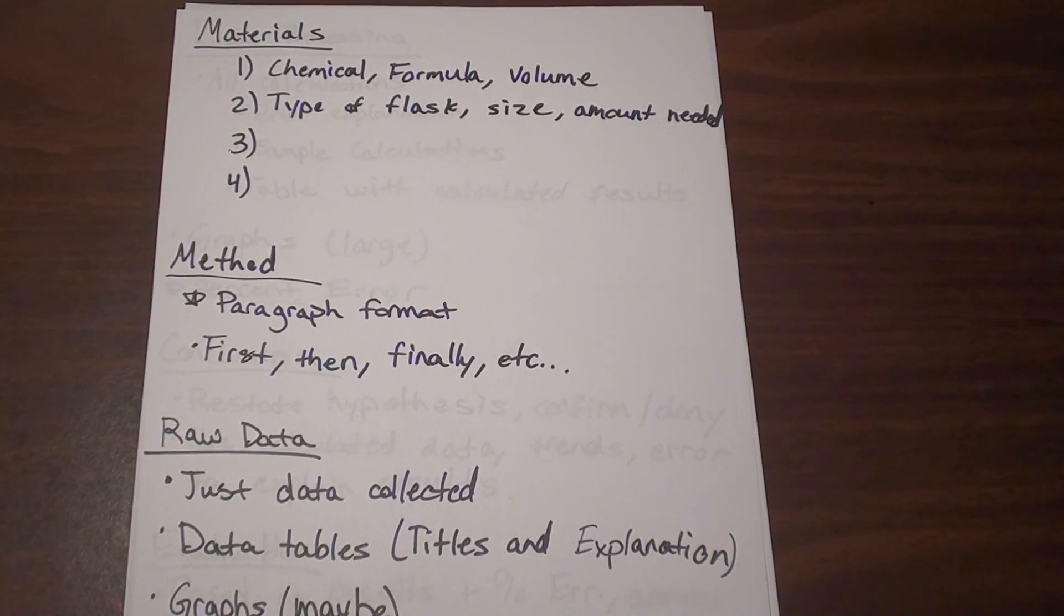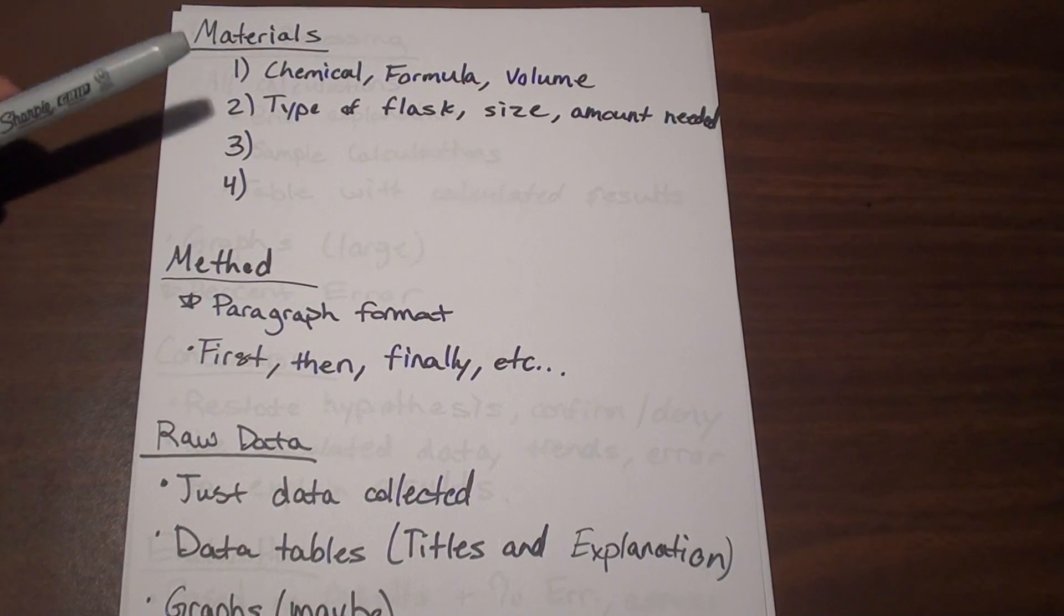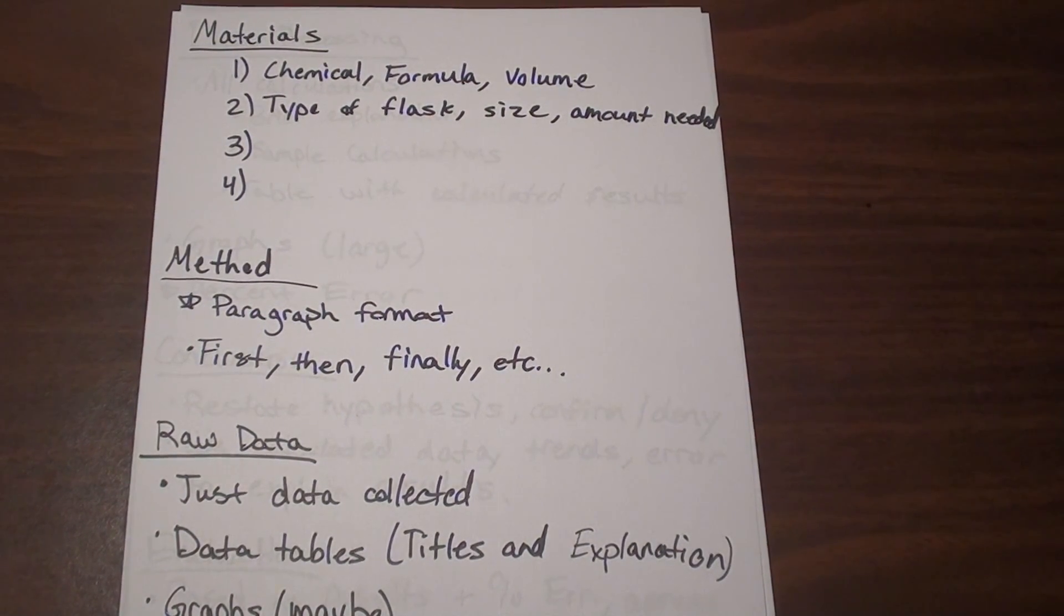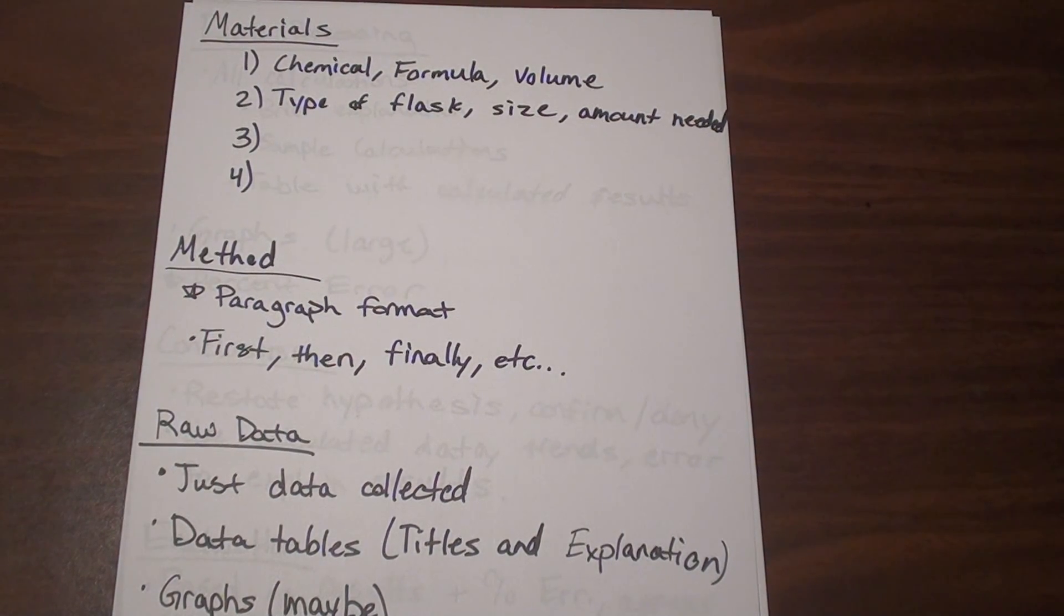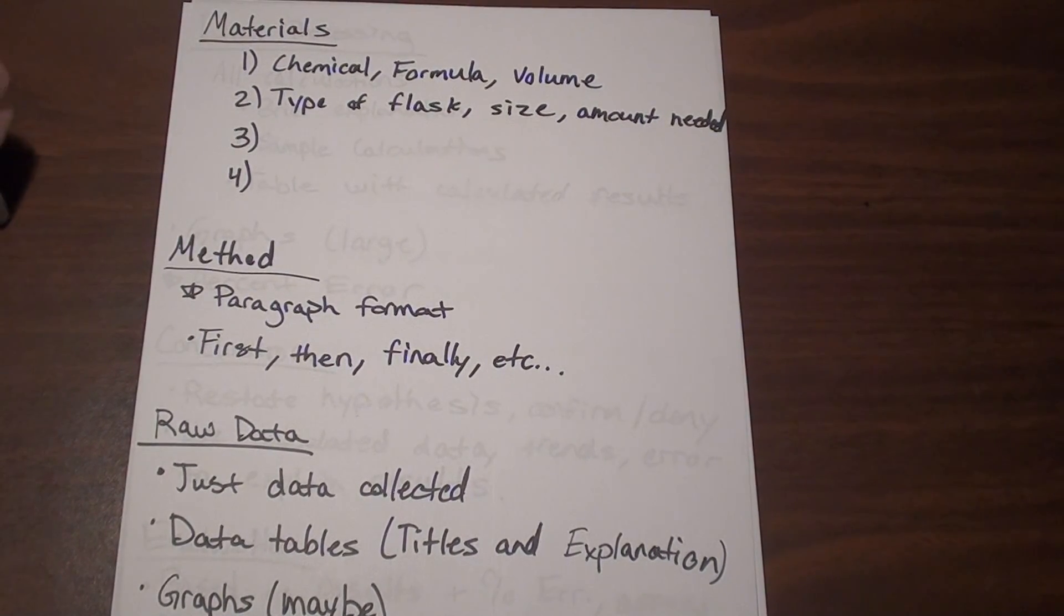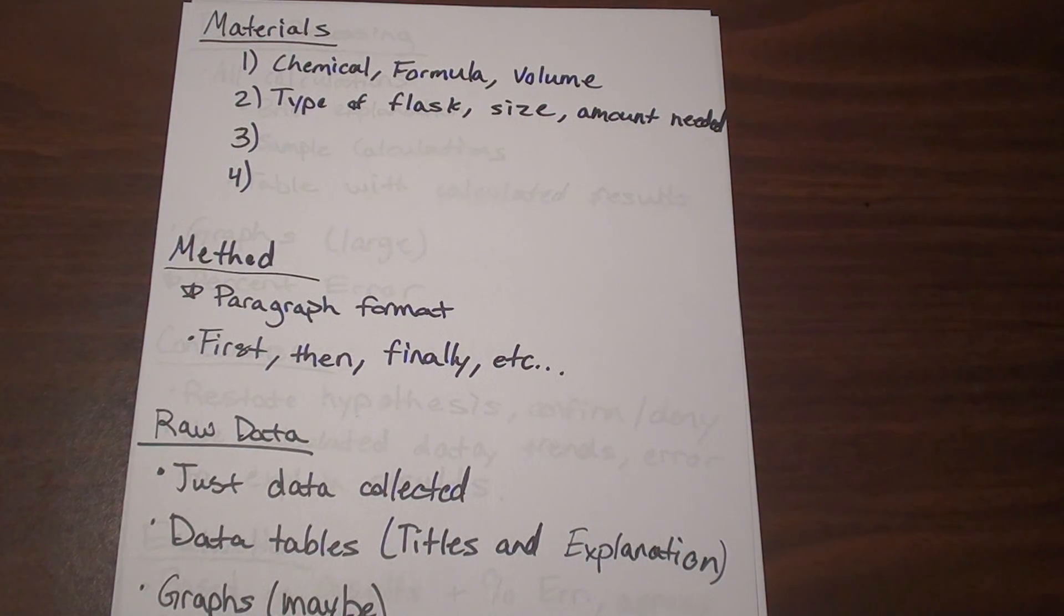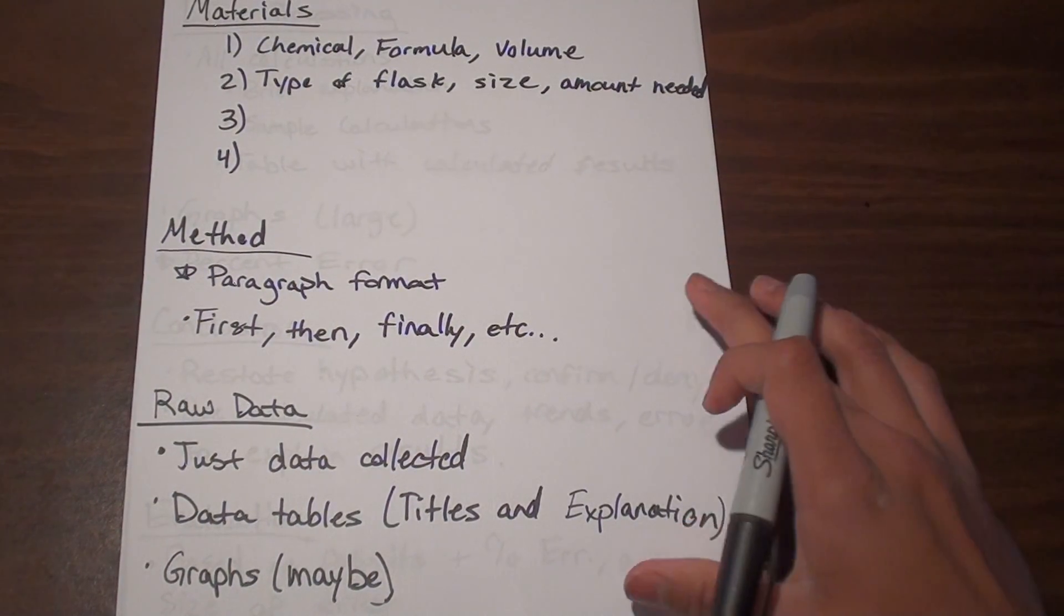And then the method. The method, unlike some of the other labs that you've written maybe in biology or other classes, the method is not going to be in a one, two, three, four type of format. It's going to be in a paragraph format, so don't be afraid to use things like first, then, finally. And make sure you're using the third person passive tense. And then really it's pretty straightforward. Just make sure you don't make a block of text in which you're saying what you did. Make sure to break it up in logical paragraphs. Like let's say if you're doing a titration, maybe one paragraph can be about the preparation of the solutions, then the next can be about the titration itself, and so on and so forth. So just make it easy to read and make it clear the steps that you took to carry out the lab.